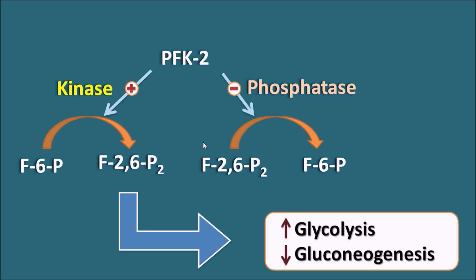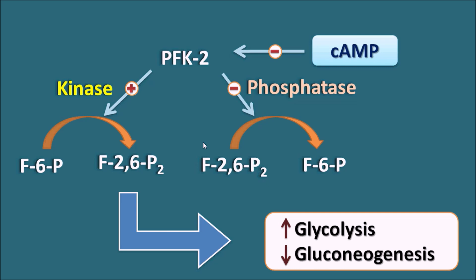When PFK2 activity is increased, more fructose 2,6-bisphosphate is formed, resulting in increased glycolysis and decreased gluconeogenesis. Here, cyclic AMP plays a key role. Cyclic AMP inhibits PFK2 activity, thereby reversing these two processes — decreasing glycolysis and increasing gluconeogenesis. Since there is less formation of fructose 2,6-bisphosphate, glycolysis is inhibited and gluconeogenesis is increased. This results in increased glucose levels in the body.